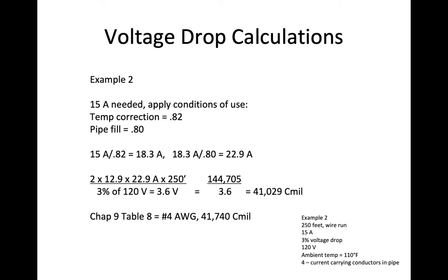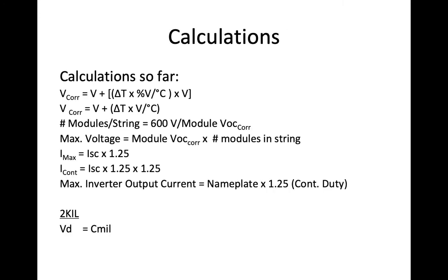Here it is all laid out for you. These are all the equations we've used so far in this class. Here's the temperature correction calculations, temperature coefficient calculations for a string. I'm going to divide the answer from this to get my number of modules in a string. I'm going to take module maximum voltage in a string. I'm going to take module Voc corrected times the number of modules in a string to get Vmax.